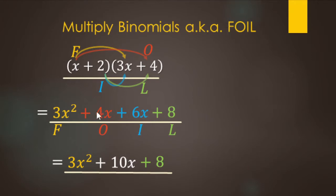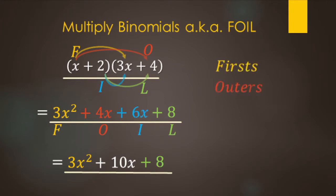So basically what we're doing when we're multiplying binomials — we have (x + 2) times (3x + 4). We're going to multiply both of these terms, the x and the 2, times both of these terms, the 3x and the 4. So it's going to be x times 3x, x times 4, then 2 times 3x, and then 2 times 4. The acronym stands for: First, Outer, Inner, Last.